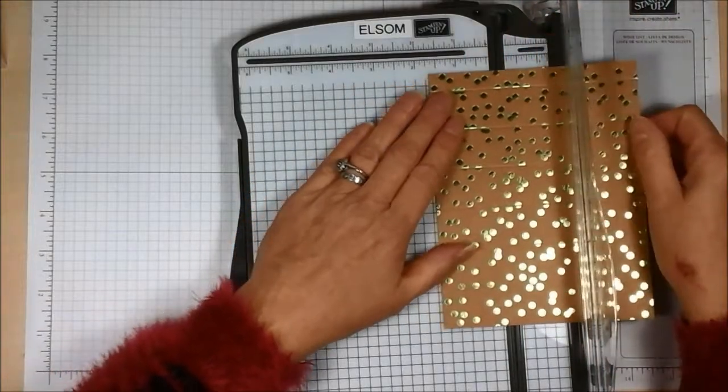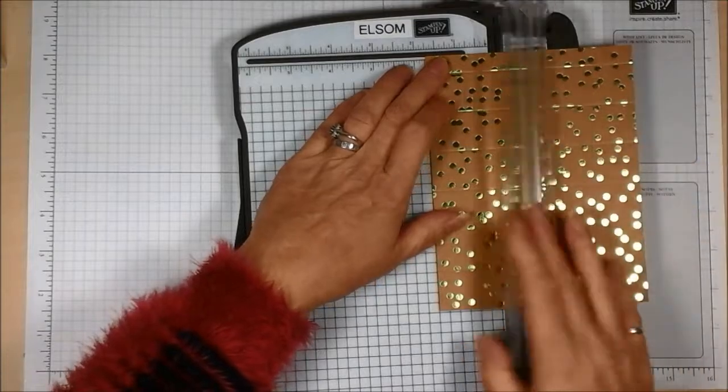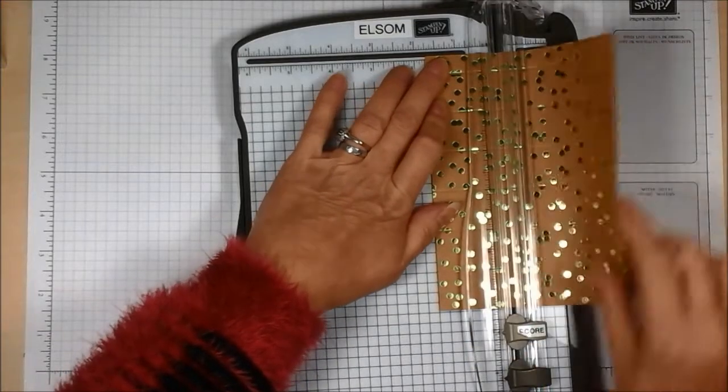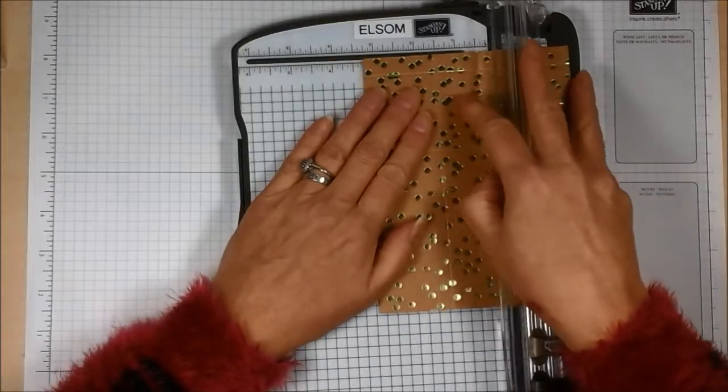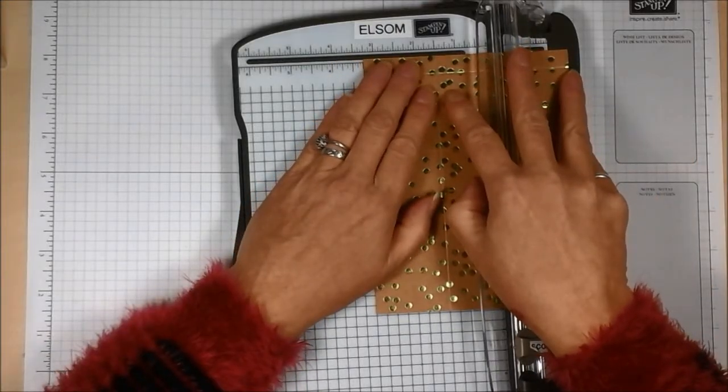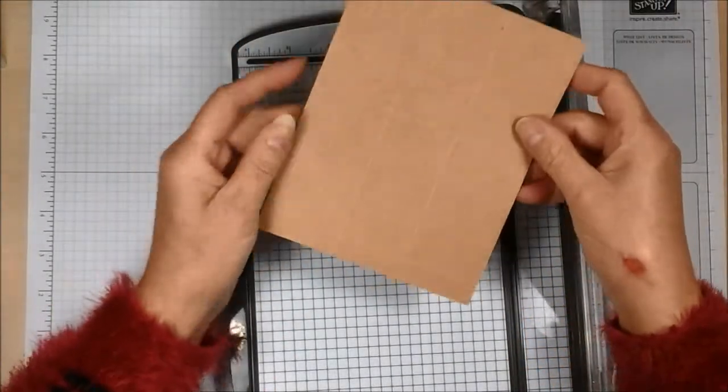Turn it round so the short side is at the top and you're going to score it at one and three quarters, and three and a quarter. And that's it. That's all we need to do.